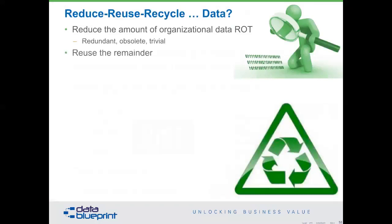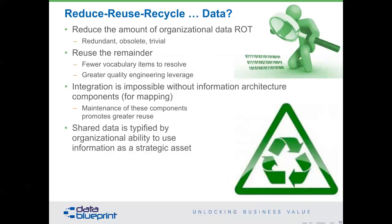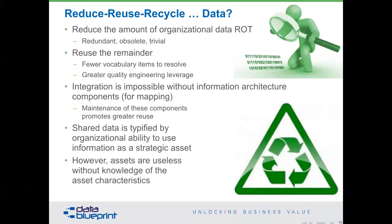Redundant, obsolete, and trivial data gets in the way. Removing it makes it easier to focus our efforts as stewards on improving the remainder by making it more understandable and making descriptions about how data is used in the organization also understandable. Greater quality data gives us more engineering leverage as we're trying to do whatever it is our organization does — whether you're a nonprofit, in the government, or in the private sector. Integration — the process of our disparate working groups working together without these information architecture components — is not possible. Maintenance of these components promotes greater reuse, which means that data sharing becomes exemplified by the ability to use information as a strategic asset.